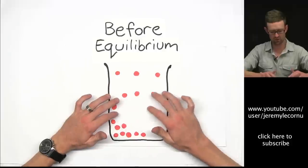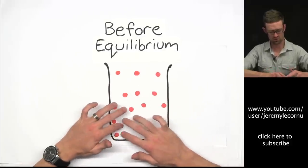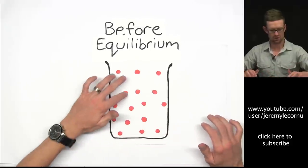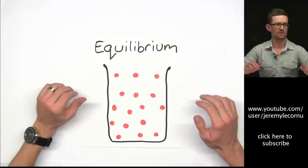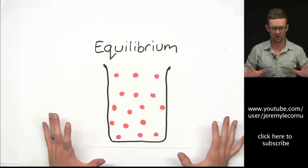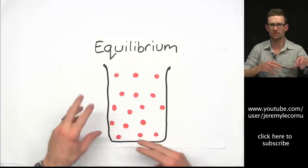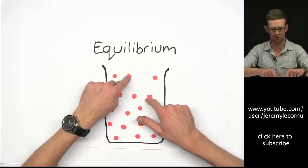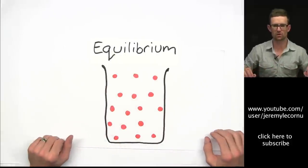We had the before equilibrium scenario, and now we've reached equilibrium. One thing to realize is that even though we've reached equilibrium here, the particles still move. You just don't notice it because there's no net movement. These particles are still moving around, but they're staying evenly distributed.